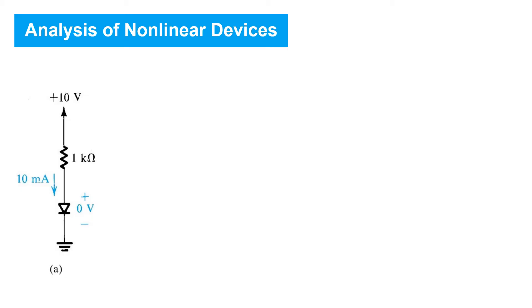So first, let's consider what happens if we assume that the diode is reverse biased. Now we're not sure about it at this point, but let's go ahead and perform the analysis, making this assumption and see what happens.